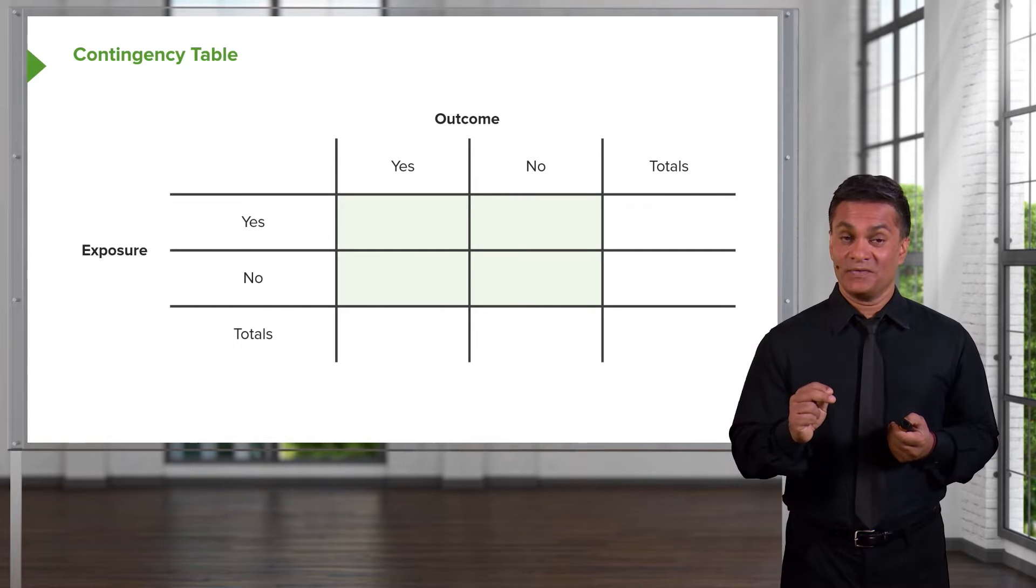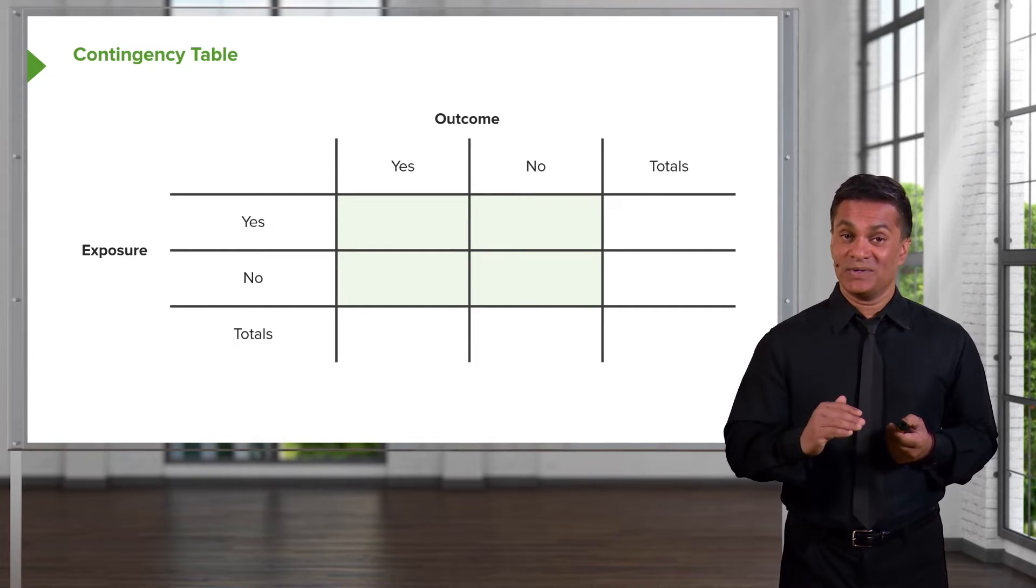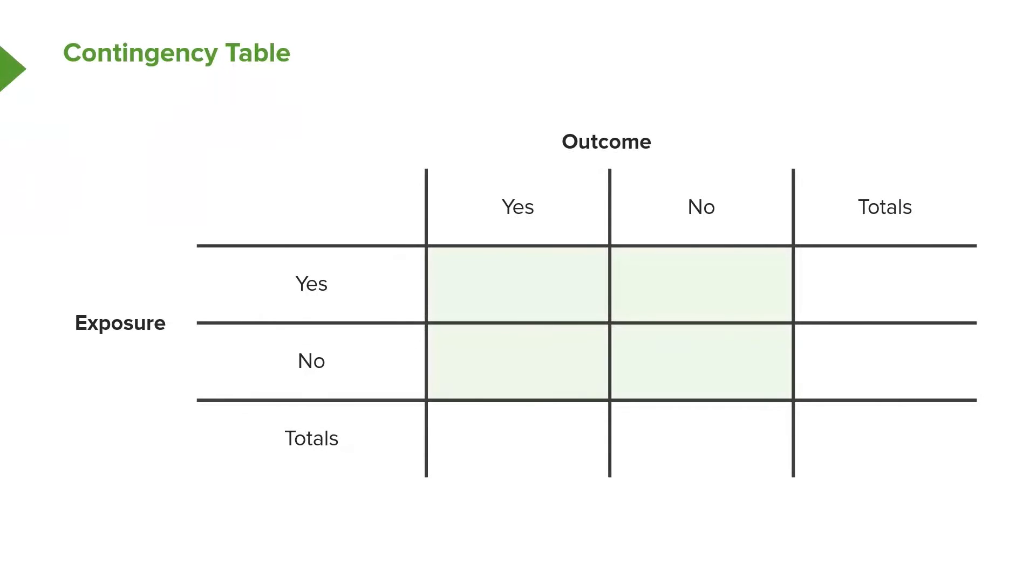As well, the positive must be the first thing. For example, whether or not you get the exposure, yes is first, no is second. Yes outcome is first, no outcome is second. It's important that this contingency table looks like your contingency table. Otherwise, the formulas will not work.